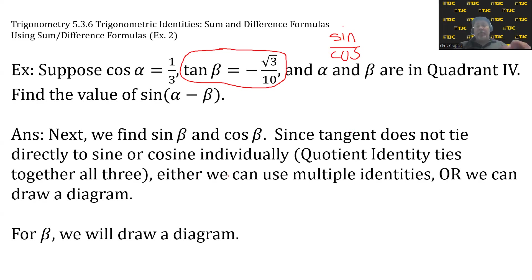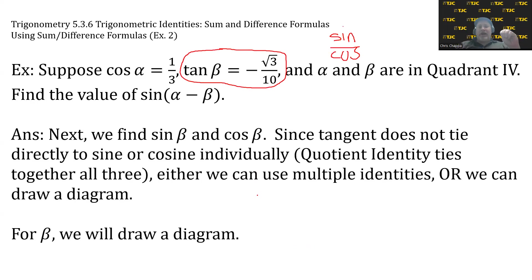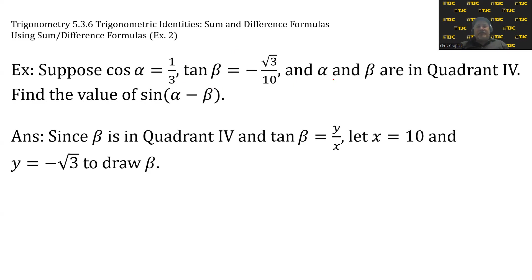I'm a big proponent of drawing diagrams for trig problems. The only reason I did the identity flow earlier is to remind you that's an option for getting from one trig function to another. But if you know a trig value in a quadrant, I would just draw a picture. For β, we're going to draw a diagram. Since β is in quadrant 4 and tangent is y/x, we're going to let x = 10 and y = -√3. Why did I put the negative on the √3 and not on the 10? Because we're in quadrant 4 where y is negative.